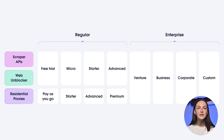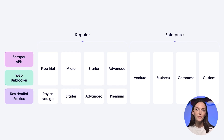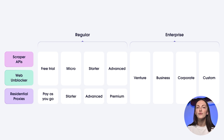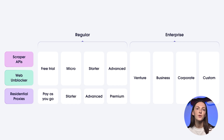The regular plans offer four tiers for each product. WebUnblocker and Scraper APIs include a free trial option, so you can try it out and see if it's the best fit for your project before committing. Residential Proxies also include a pay-as-you-go plan. For enterprise customers, we offer venture, business, corporate, and custom tiers. Our custom tier is the most flexible one, as it allows you to determine a custom price per gigabyte – perfect for companies that do web scraping on a large scale.